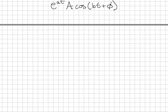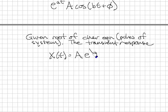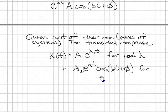Let's put this all together again. Given roots of the characteristic equation, that is, the poles of a system, the transient response will be characterized as following. You will have the form x equals some combination of a e to the lambda 1t for real lambda plus a2 e to the at cosine bt plus phi for complex lambda.